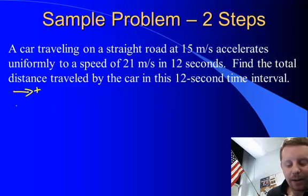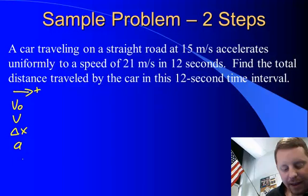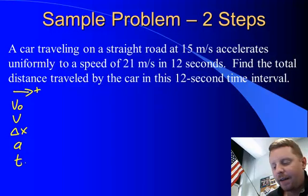Find the distance traveled. Well, we've got a horizontal motion problem again. We'll call to the right positive. And as we make our table, v-naught, v, delta x, a, t,